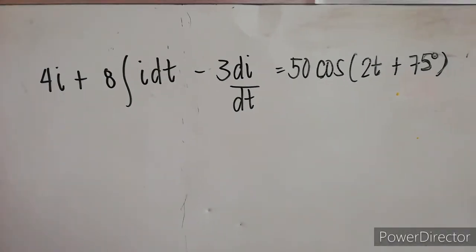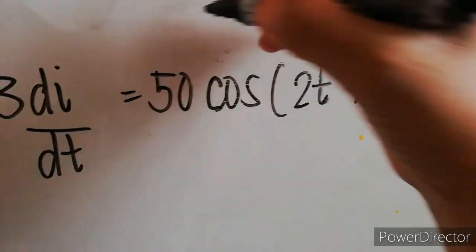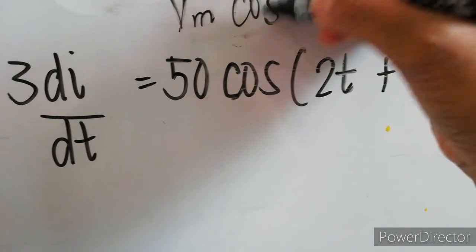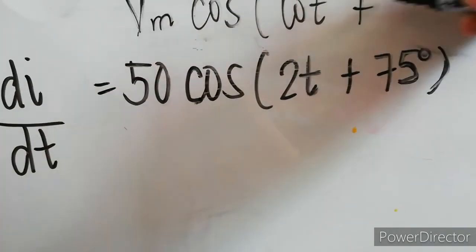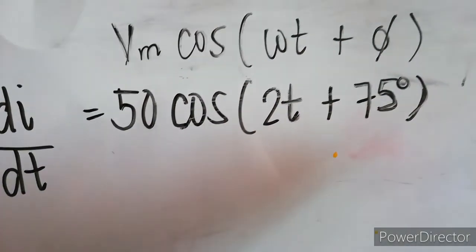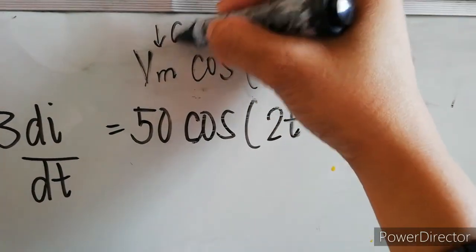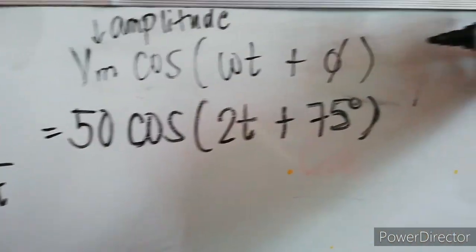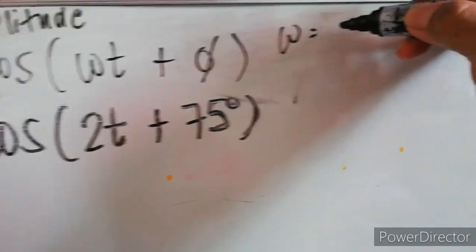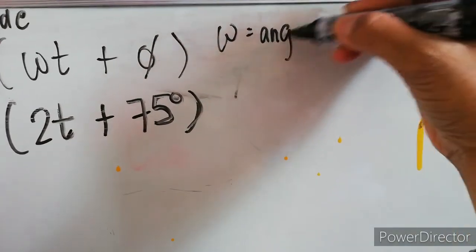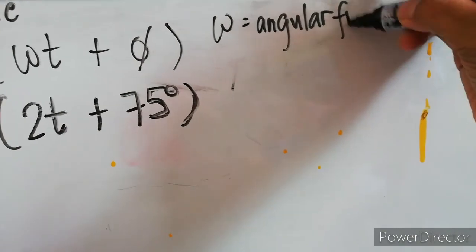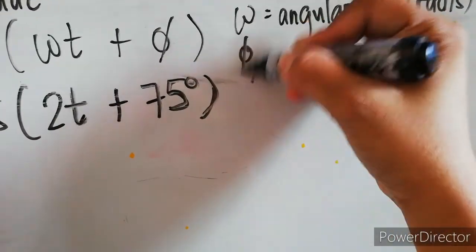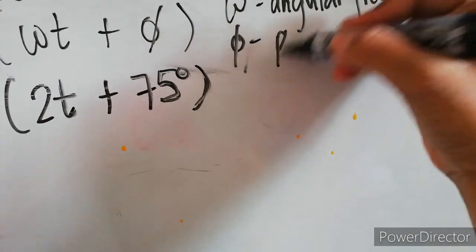Now, let's solve. The first thing that we need to do is identify this one: Vm cos(ωt + φ). So, Vm here is the amplitude, ω is the angular frequency in radians per second, and φ is the phase angle in degrees.